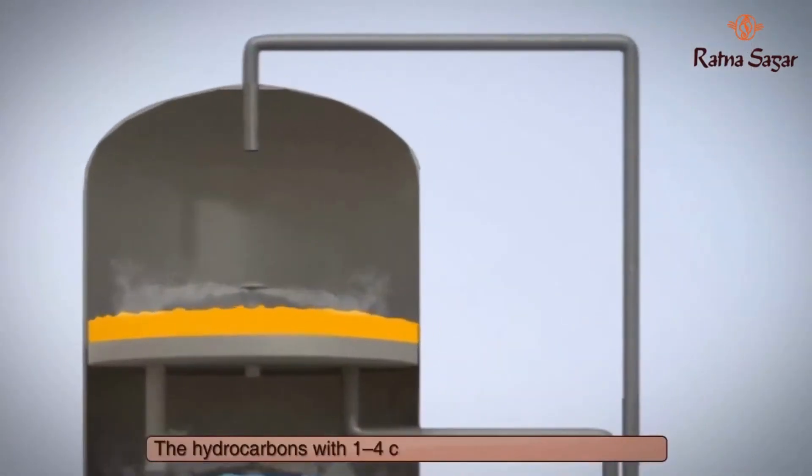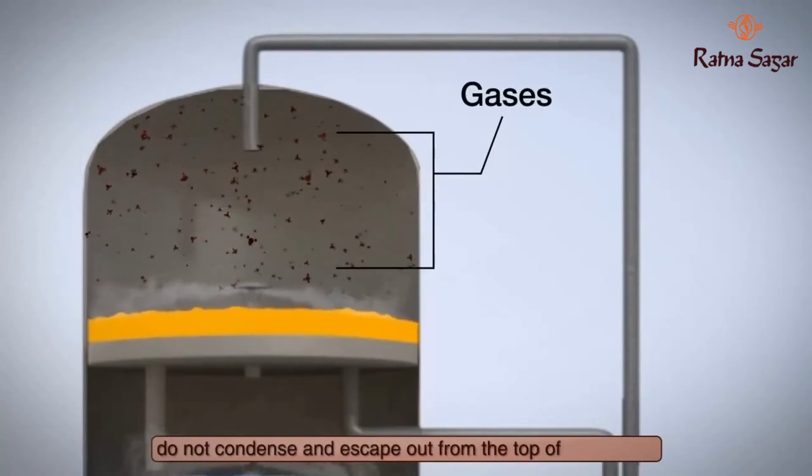The hydrocarbons with 1 to 4 carbon atoms, which are gases, do not condense and escape out from the top of the tower.